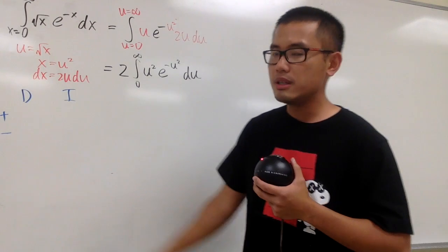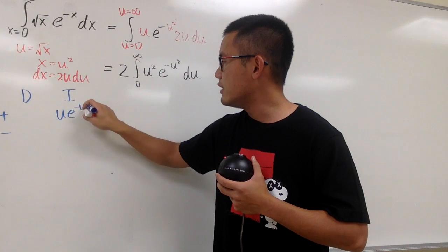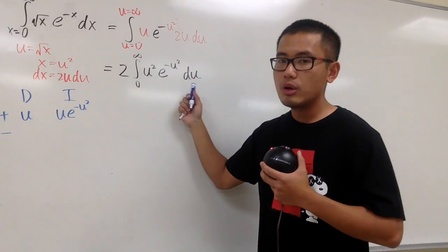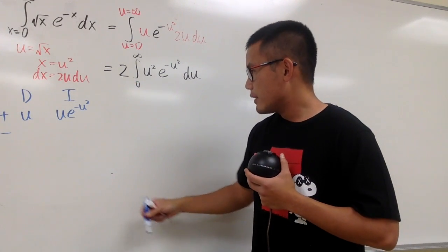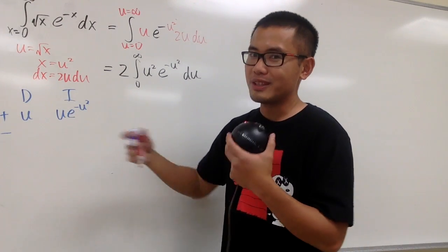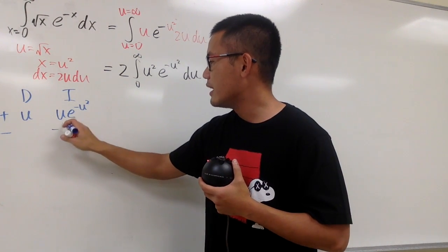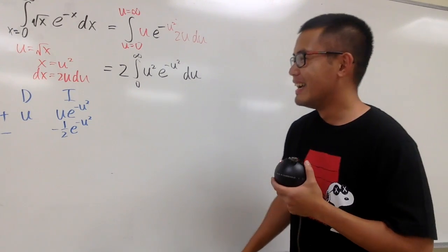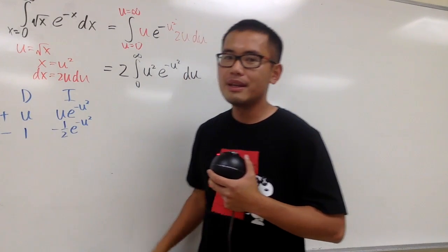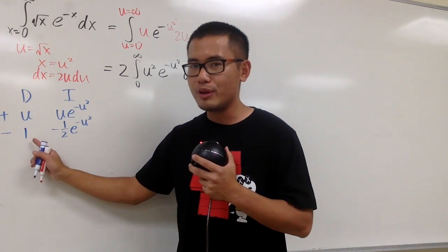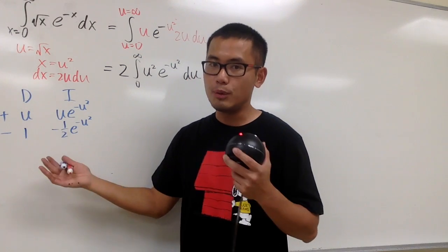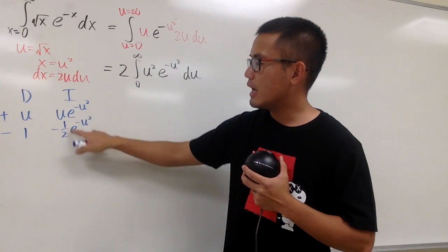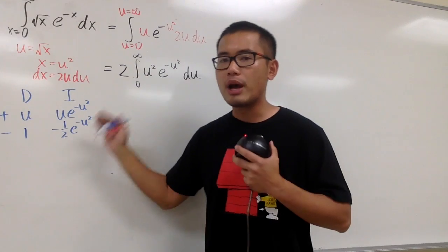Setting up the DI table with plus and minus signs: for the function to integrate, we use u·e^(-u²), and we differentiate the standalone u. Integrating u·e^(-u²) using a w-substitution gives negative 1/2 · e^(-u²). The derivative of u is just 1. Normally we'd keep going until we get 0 in the D column, but we cannot integrate e^(-u²) — it has no closed form — so we must stop here.